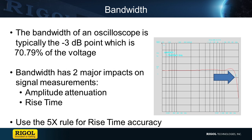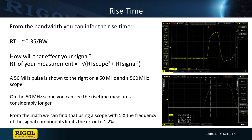But this is not the only way that the bandwidth affects a signal. Bandwidth also affects the rise time of a signal. Rise time equals about 0.35 divided by the bandwidth. The rise time of a measurement is the square root of the sum of the rise time of the scope squared plus the rise time of the signal squared.